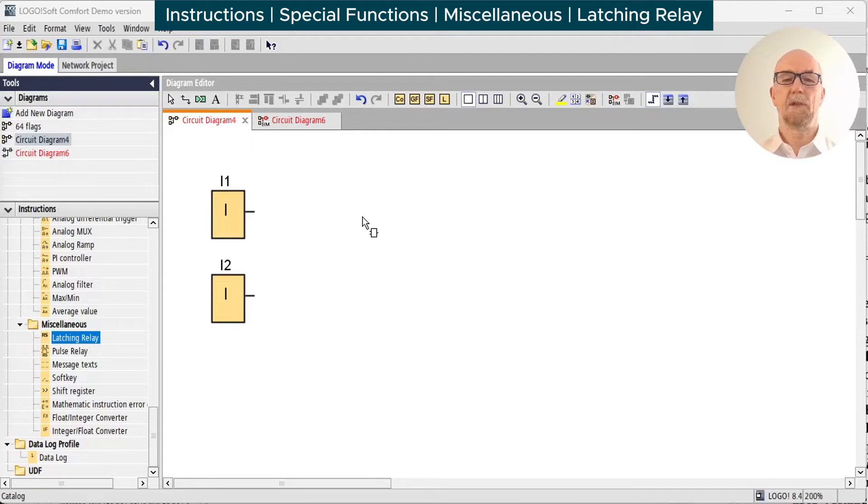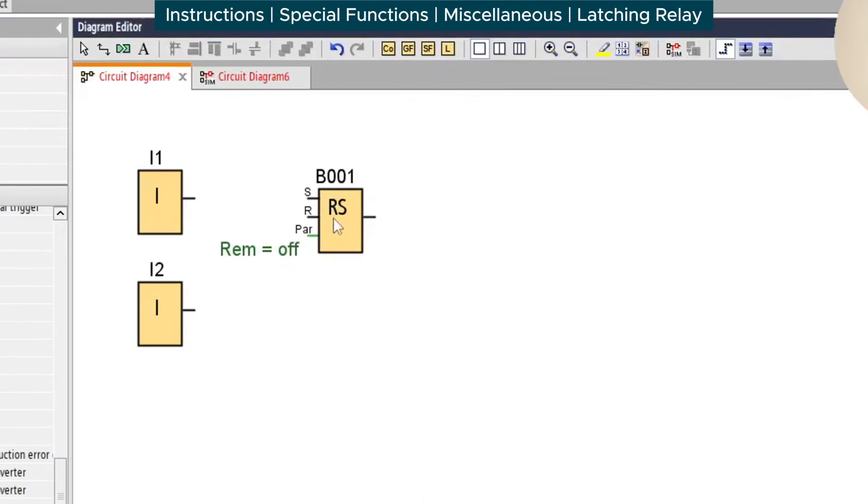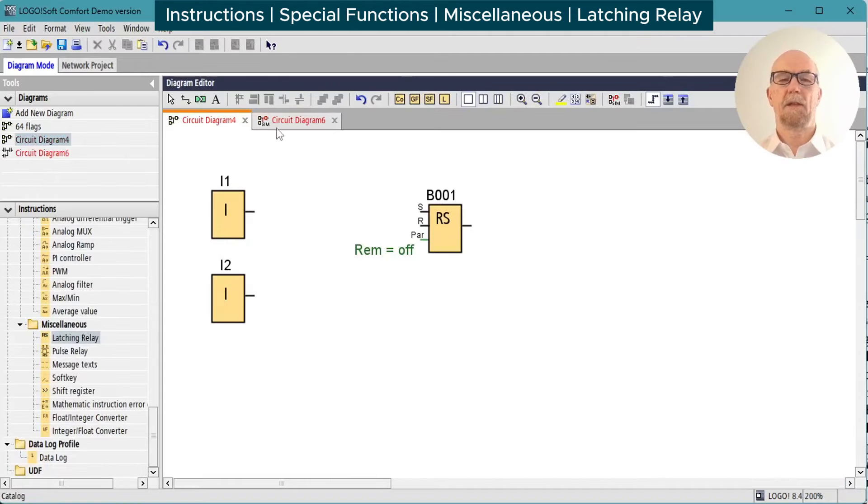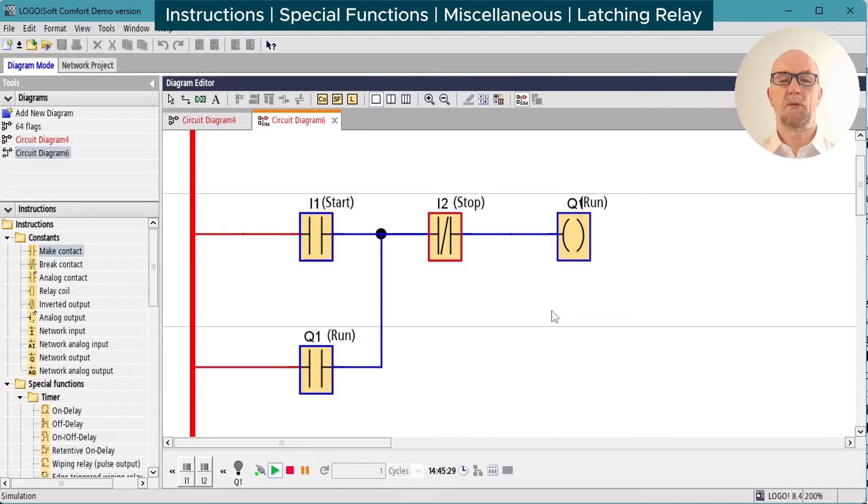The latching relay is a common control requirement. Traditionally in ladder logic, we would make a latching relay using a regular relay coil and one of its own contacts, so that when the start button is pressed, the relay turns on and holds itself on after the start button is released. Pressing the stop button interrupts the supply to the run relay, which opens this contact, unlatches, and the circuit is reset.